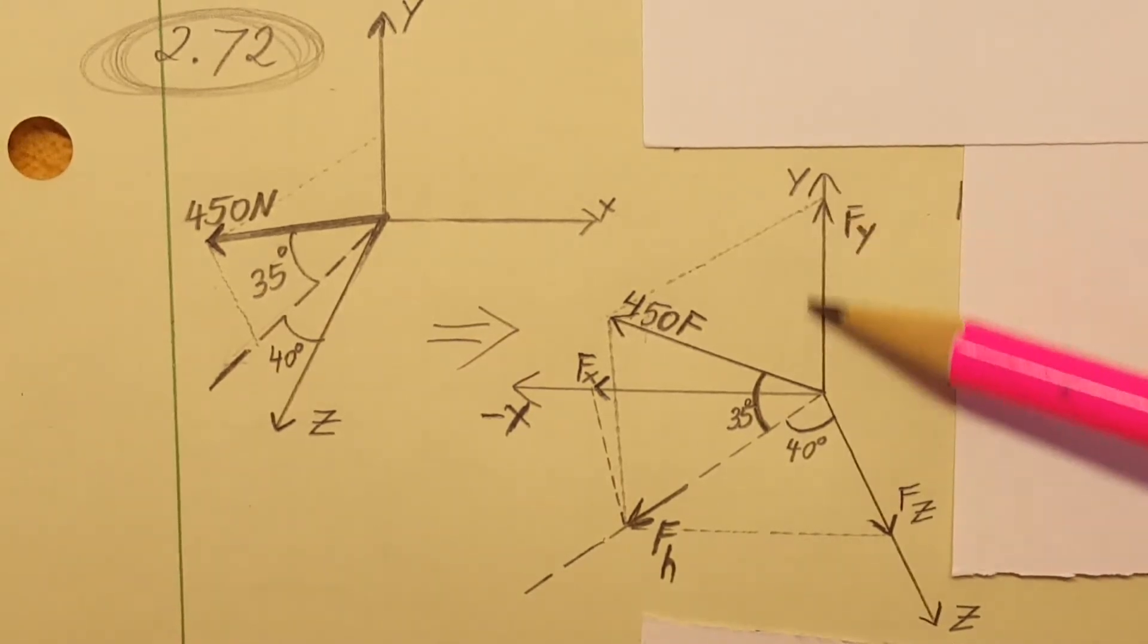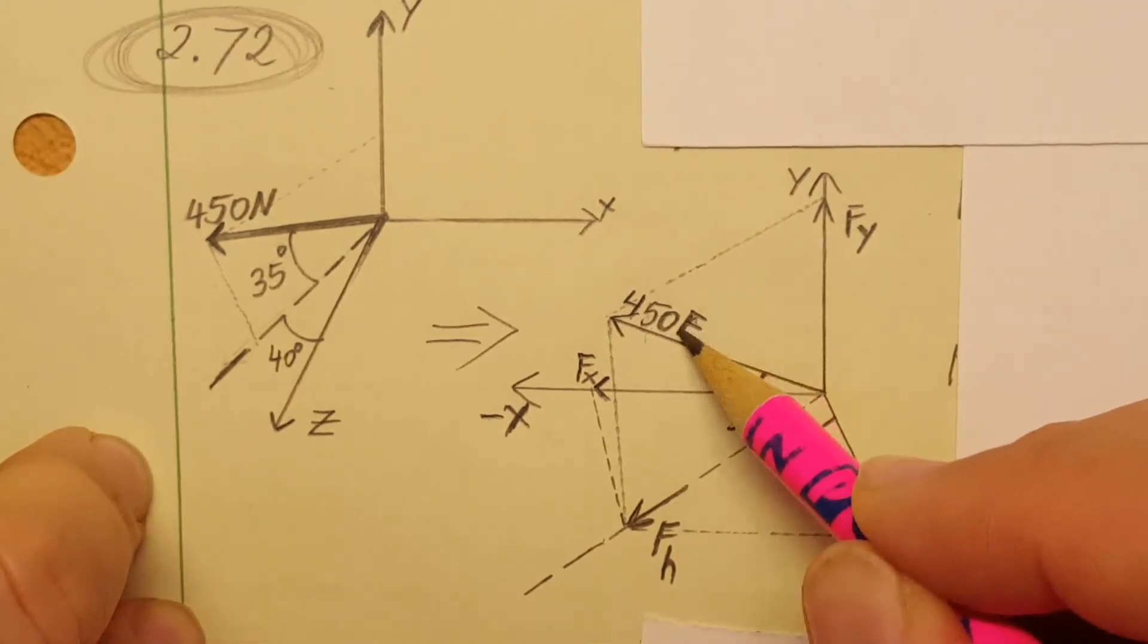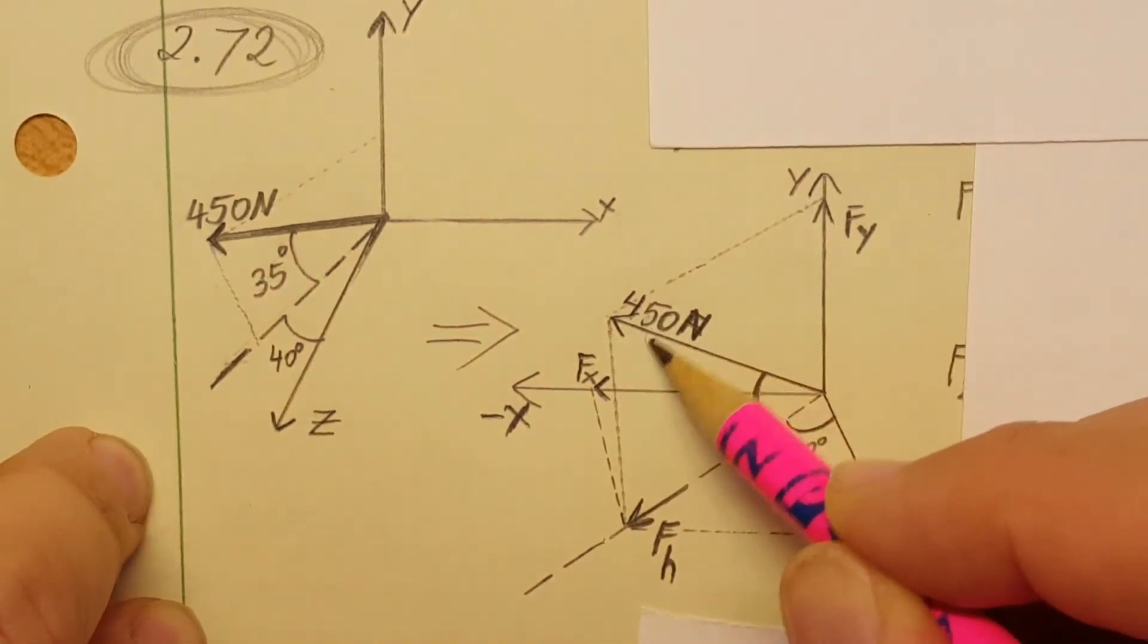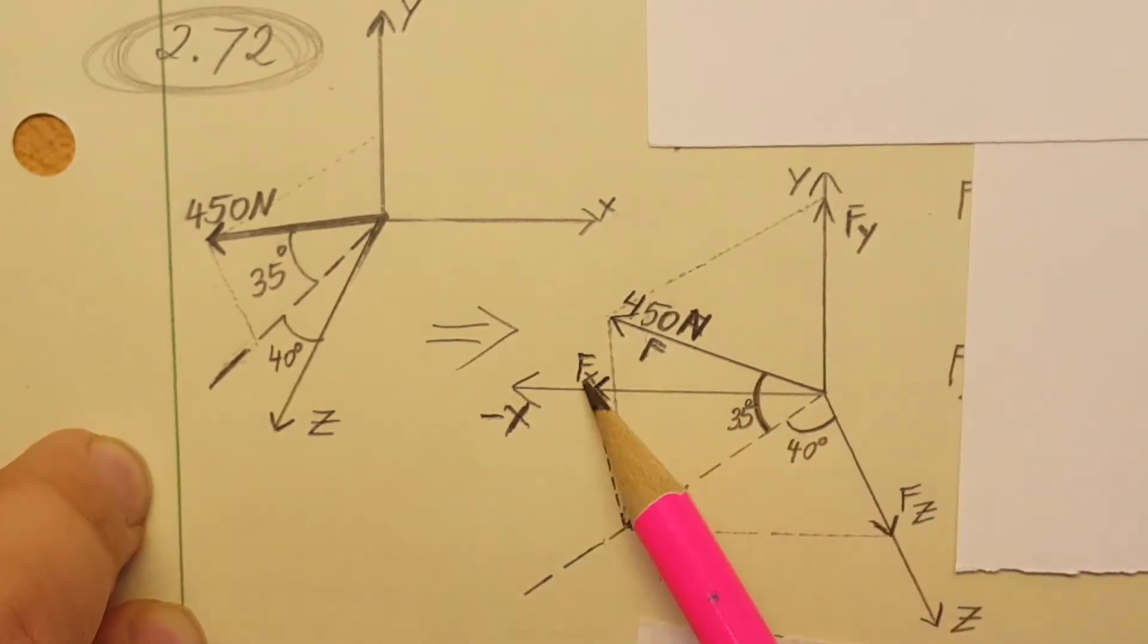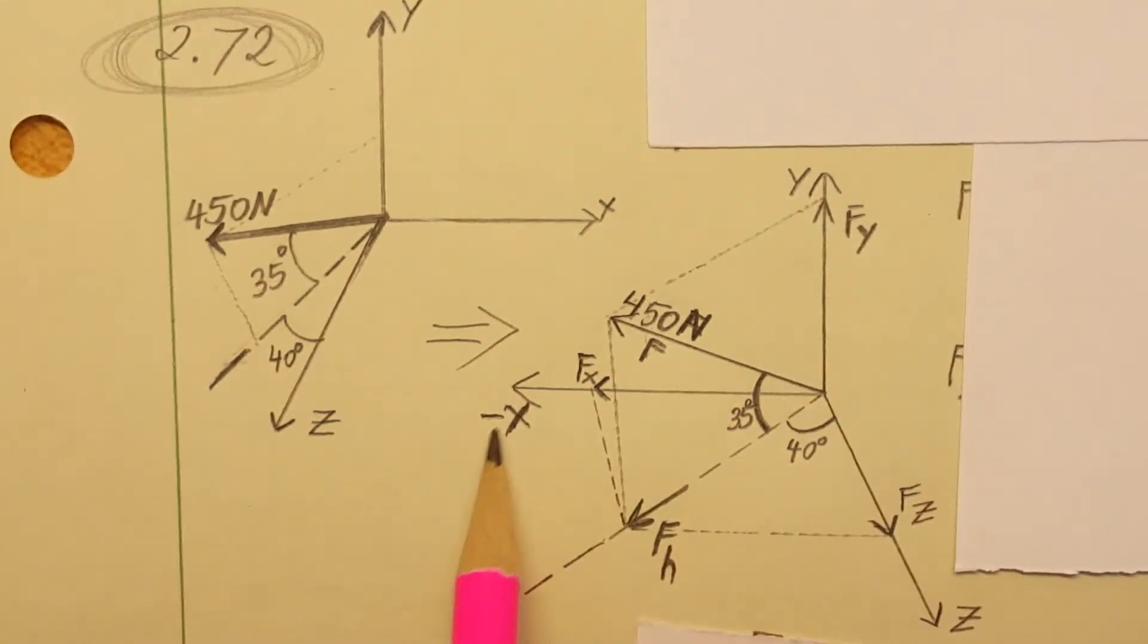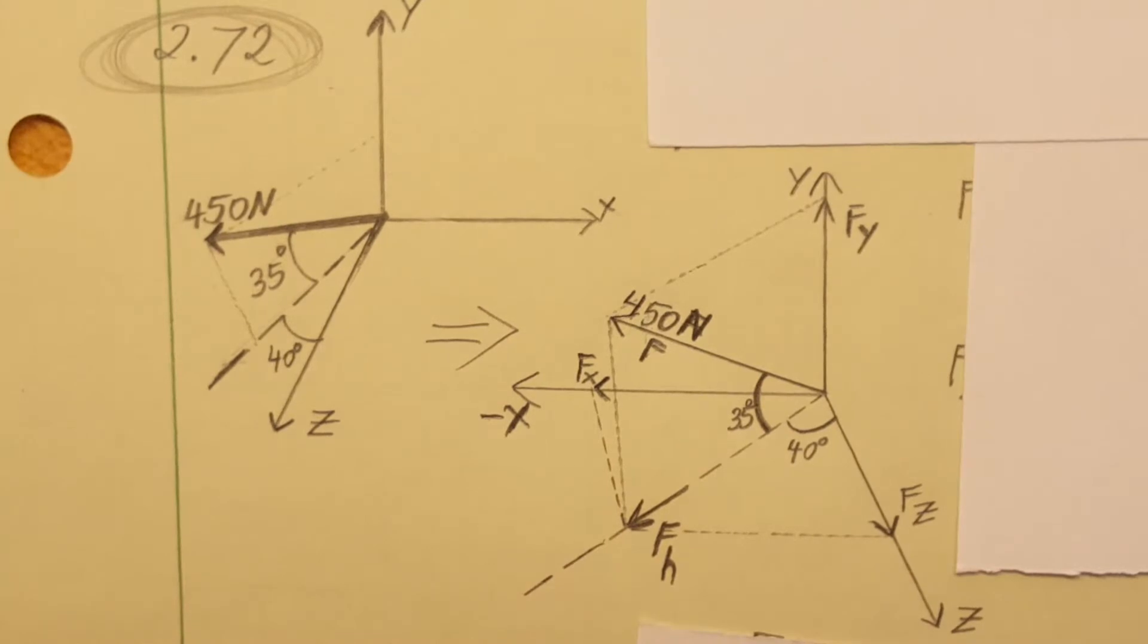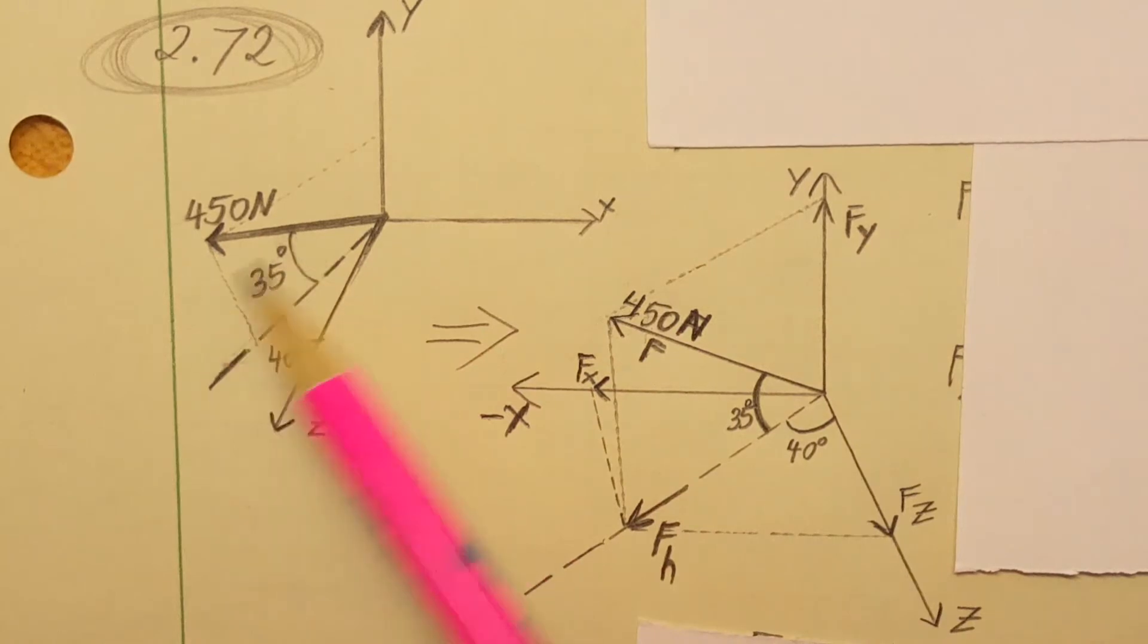Okay first thing what I did is I redrew it in a way that we can see this 450 Newton vector a little bit better. I'm gonna call it force F. I rewrote it and this way I'm looking at it from the negative X axis direction from this corner instead of from Z and positive X because it's harder to see the component so I redrew it from this angle.